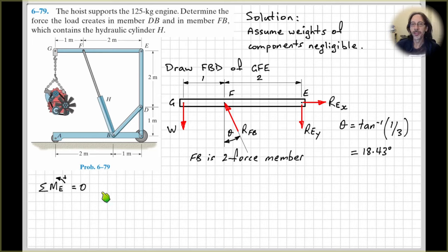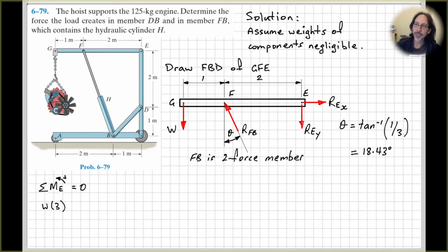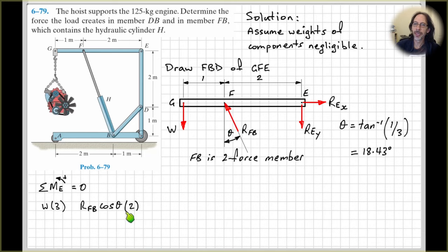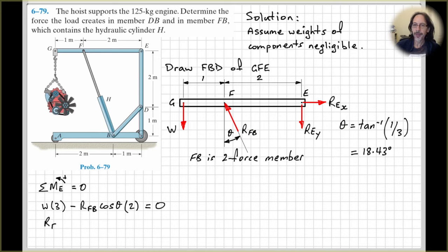Now we can start to apply our equations of equilibrium. Take moments about point E, because we've got two unknowns going through there. We'll have the weight times perpendicular distance of 3 — it's tending to rotate anti-clockwise about point E, so it's positive. Then we have the vertical component of the force in member FB, which is RFB cos theta, and its perpendicular distance is 2 — negative because it tends to rotate clockwise about point E. Set that equal to zero and solve for RFB. We get nearly 2 kilonewtons for the force in the hydraulic cylinder.